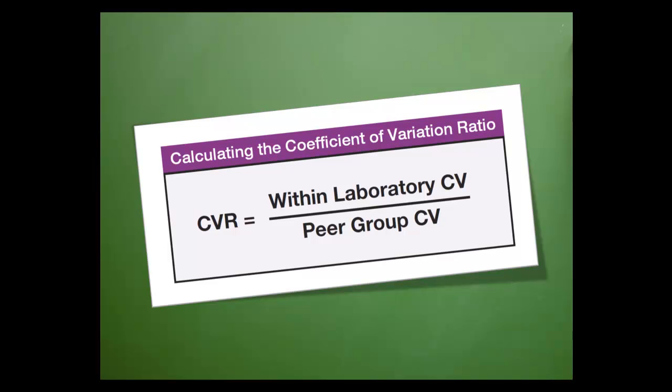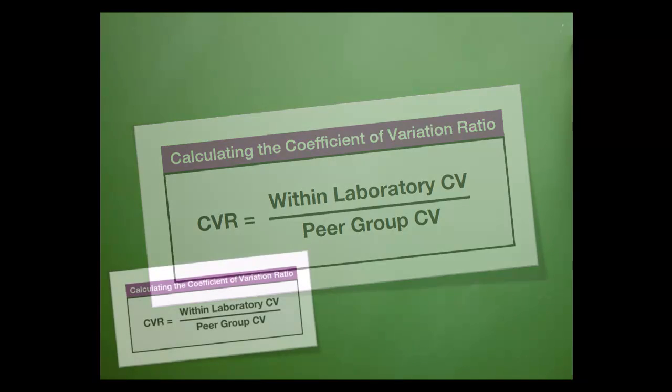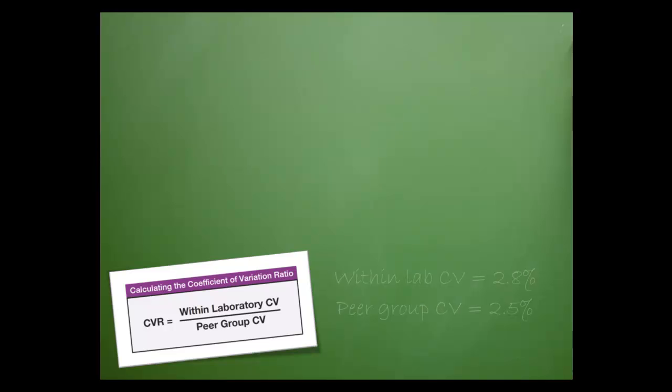Now that you understand how the formula works, let's practice by plugging some numbers into it. Let's move our formula down to the corner just in case we need it. These are our values for our within laboratory CV and our peer group CV.